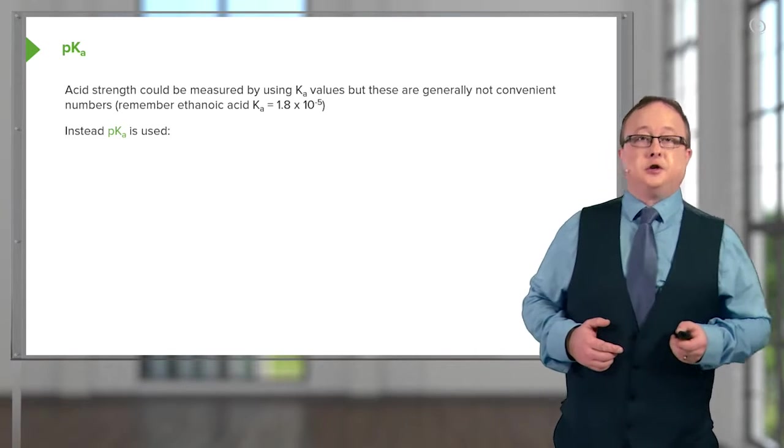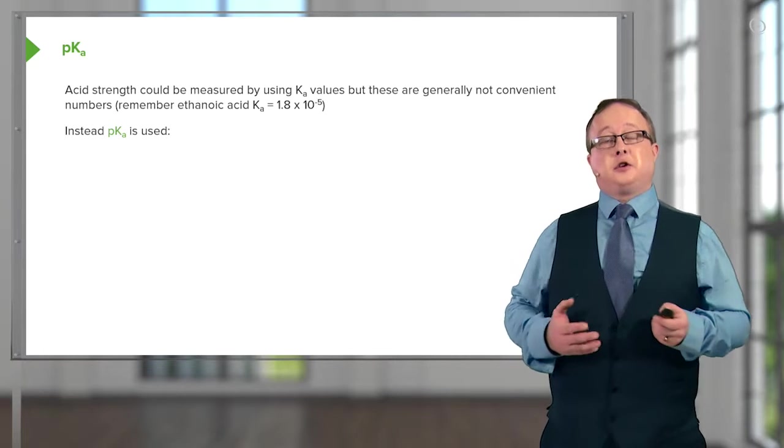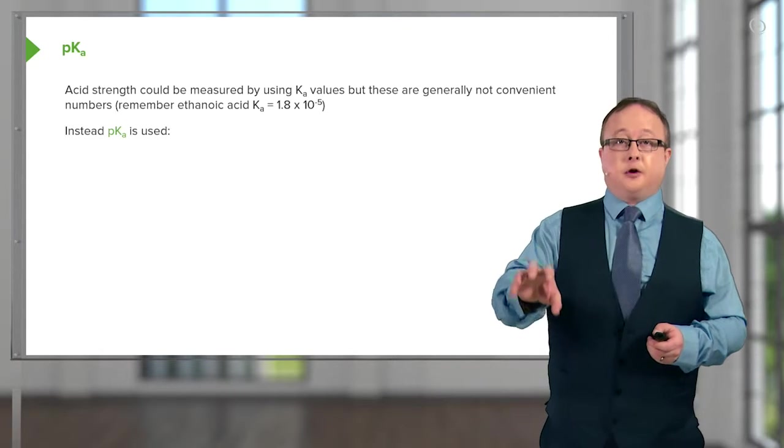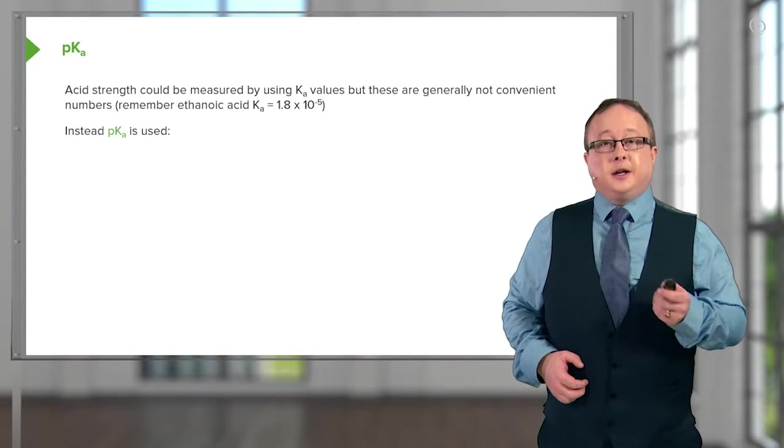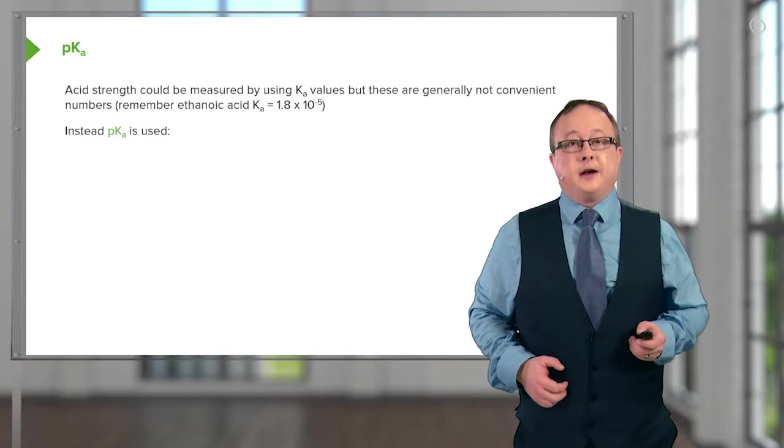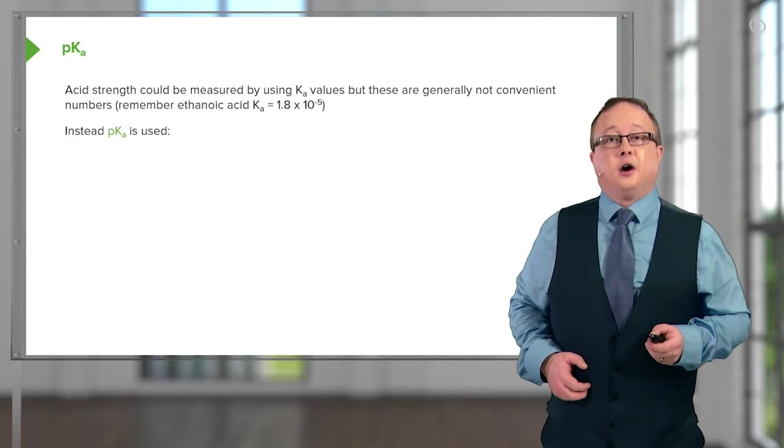Acid strength can be measured using Ka as we've already indicated. The larger the Ka, the greater the degree of dissociation of the acid into the conjugate base and, of course, the important H⁺. But these are not generally convenient ways of measuring it because you have to use standard form in this case.